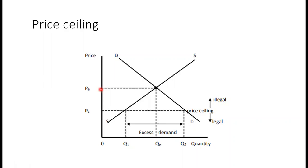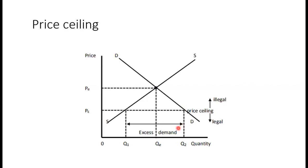An effective price ceiling is set below the equilibrium price. By setting a maximum price below the equilibrium price, we are saying that it is illegal to charge a price above that set by the government. Because the good has become cheaper, demand for that good will increase. However, because the good has become very cheap, some firms will exit the market and quantity supplied will be low, resulting in excess demand.